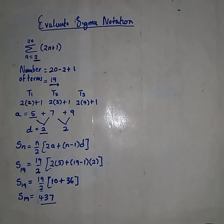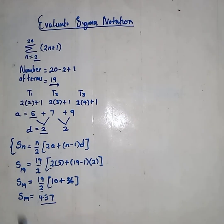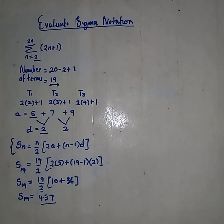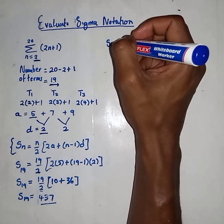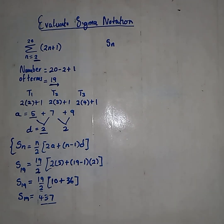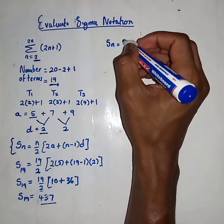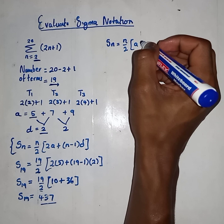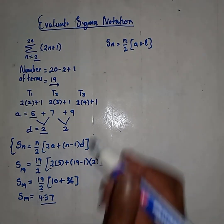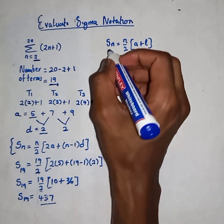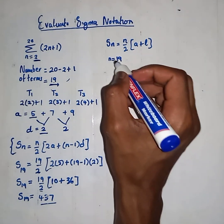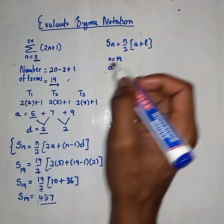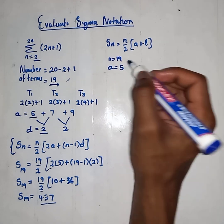We also have another way. You can either use this formula or this one: Sn = N/2 times (A + L). For this one, we need the number of terms — we already got 19. And we have our A value of 5.